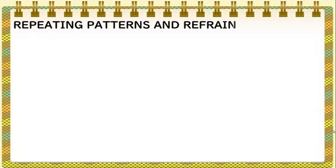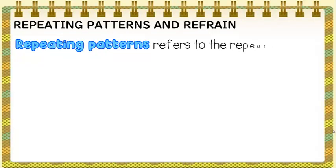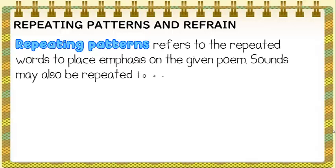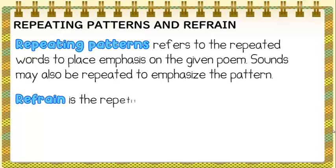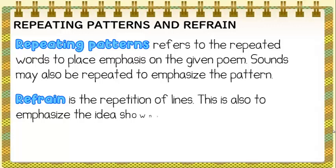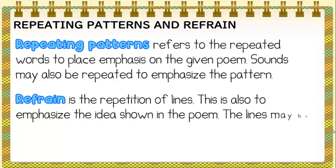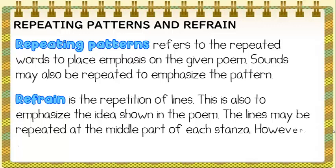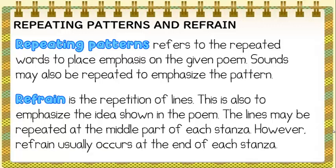Repeating patterns refer to repeated words or sounds to place emphasis on the given poem. Sounds may also be repeated to emphasize the pattern. Refrain is the repetition of lines, also used to emphasize the idea shown in the poem. The lines may be repeated at the middle part of each stanza; however, refrain usually occurs at the end of each stanza.